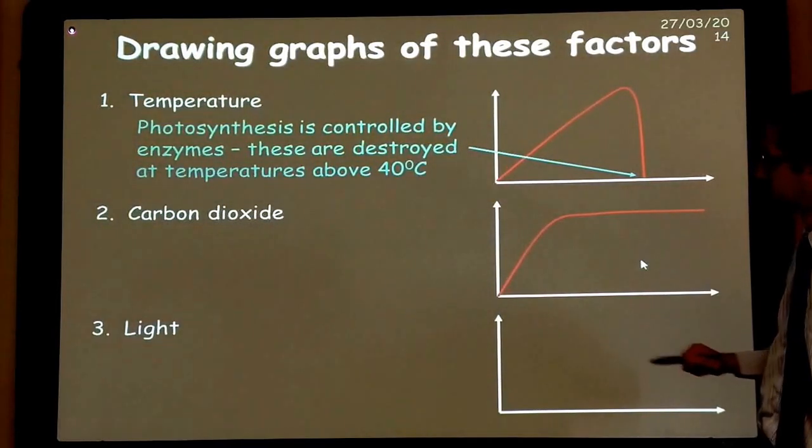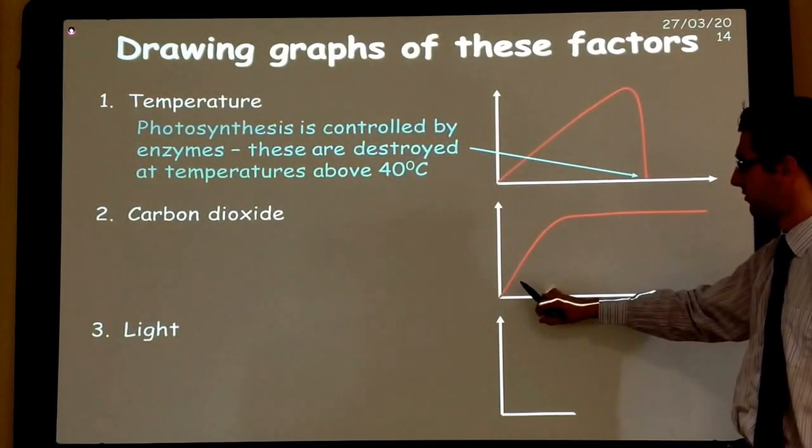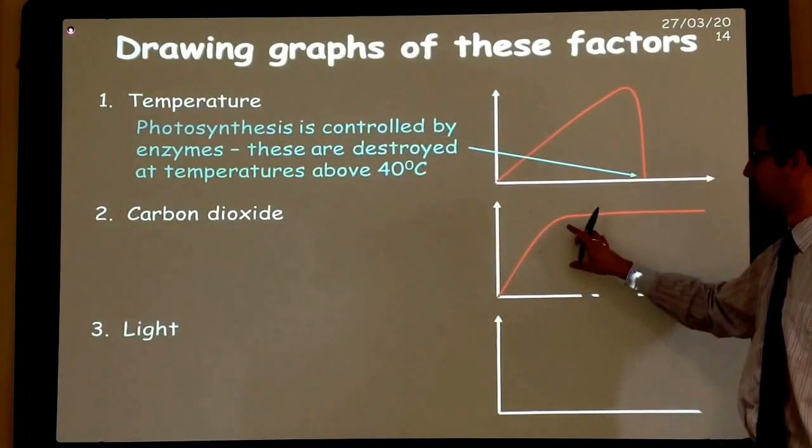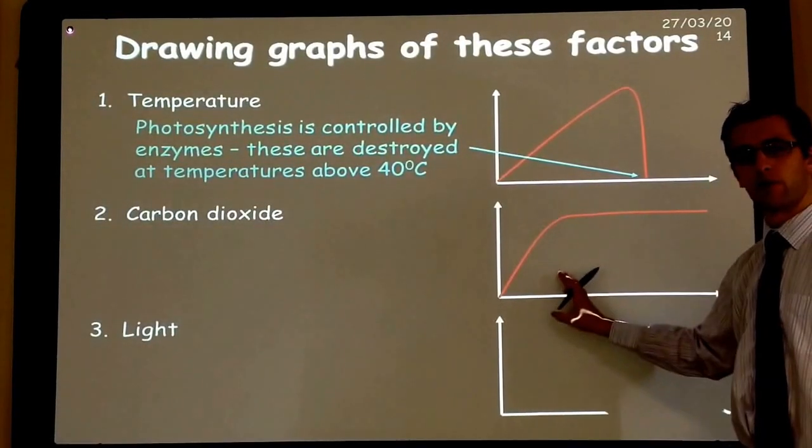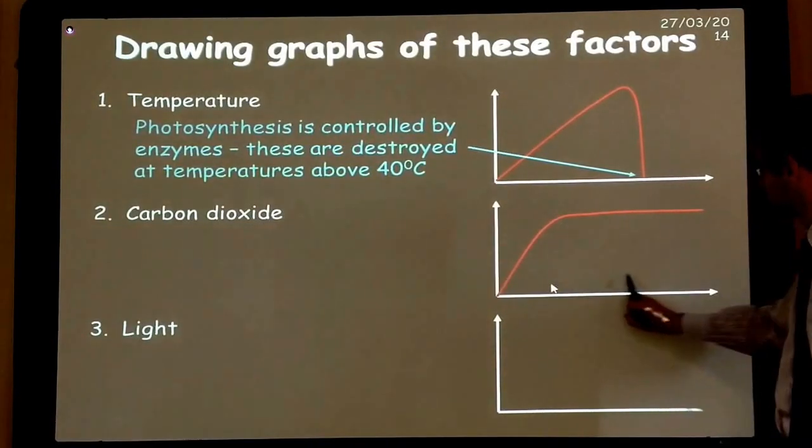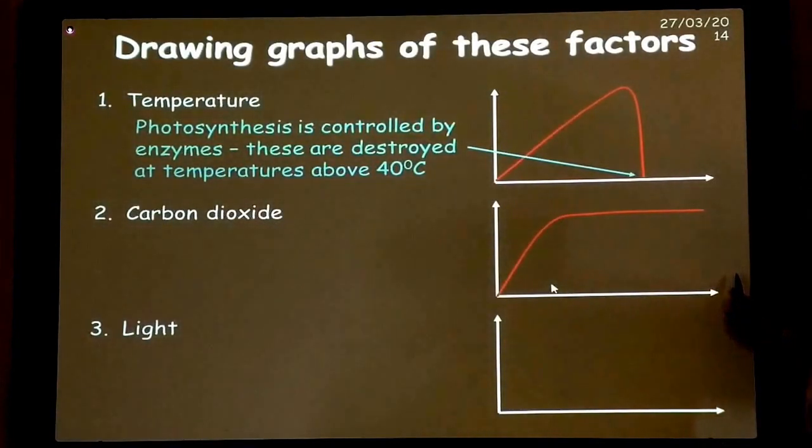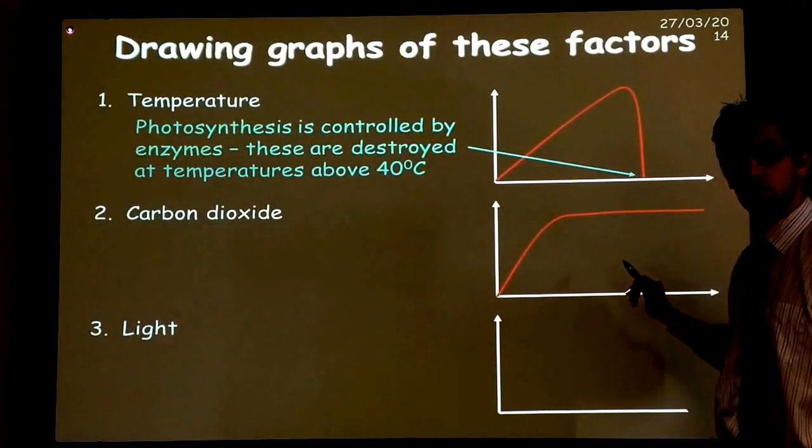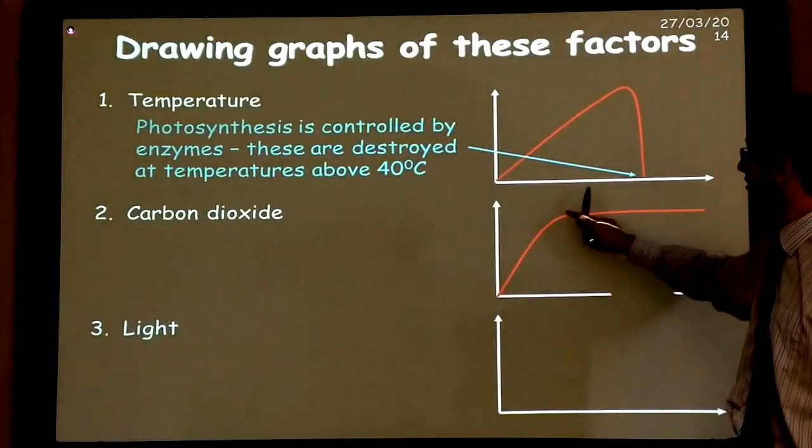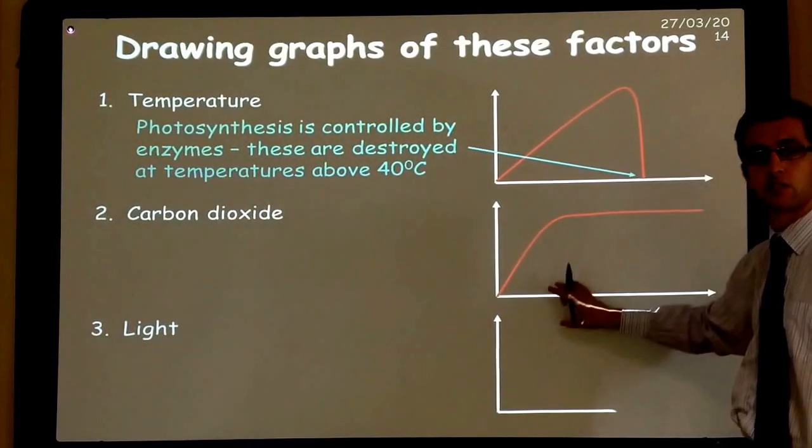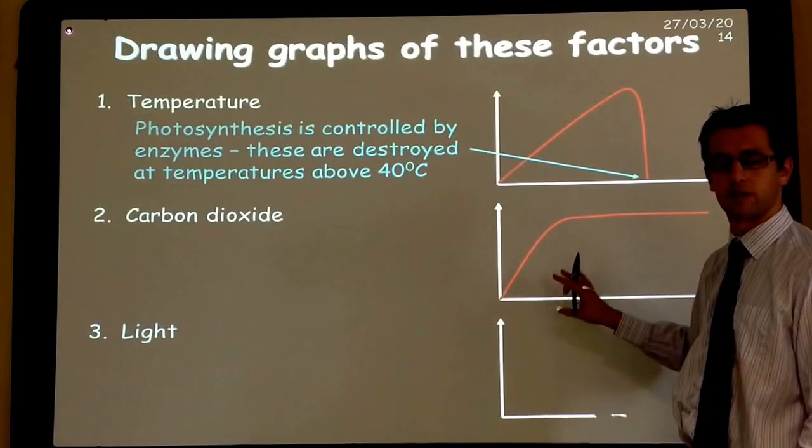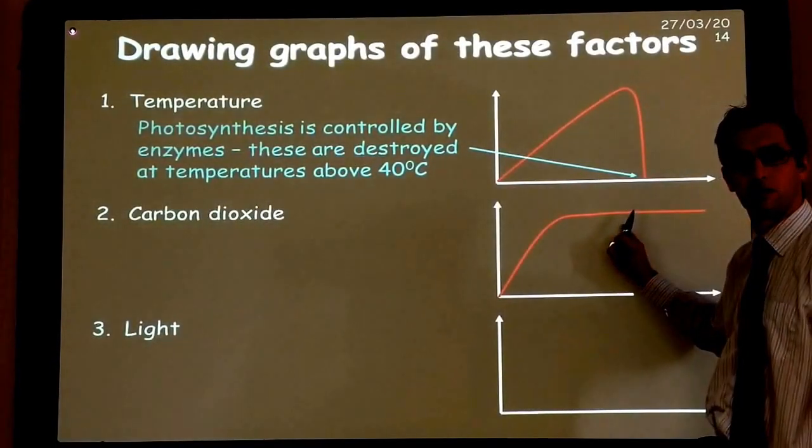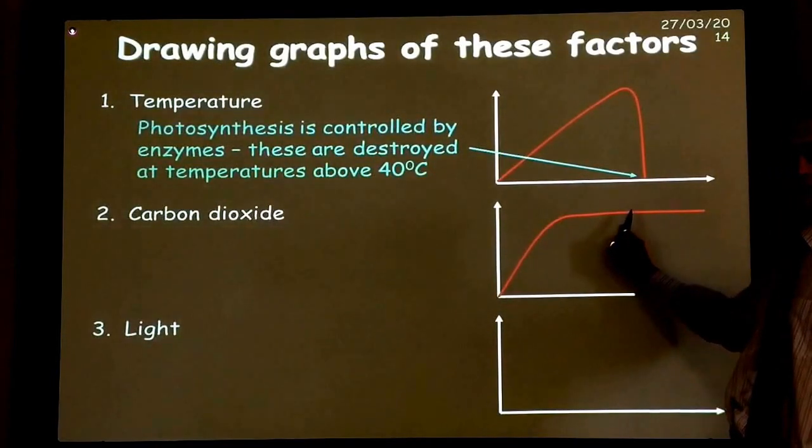Carbon dioxide. As we increase the amount of carbon dioxide available initially, so the rate of photosynthesis will also increase. However, at some point we will reach a level where no matter how much more carbon dioxide we give, the rate of photosynthesis does not increase anymore. It has not dropped to zero like it does here. So this carbon dioxide has not stopped photosynthesis happening. It has just reached a maximum rate. So no more photosynthesis can take place any quicker.